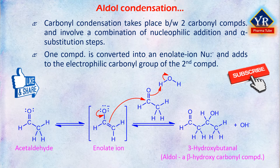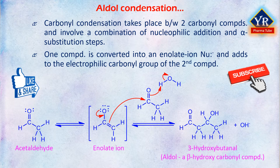One compound is converted into an enolate ion nucleophile and adds to the electrophilic carbonyl group of the second compound. In so doing, the nucleophilic compound undergoes an alpha substitution reaction and the electrophilic compound undergoes a nucleophilic addition.